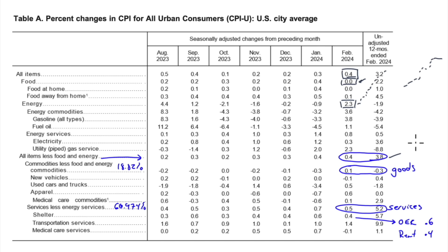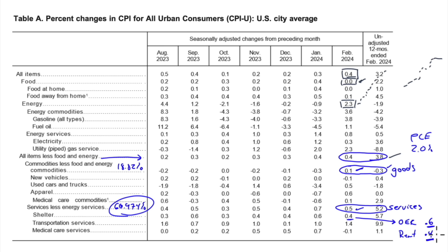All items less food and energy still at 0.4; 3.8% over the year. Remember the target is 2% on PCE, and PCE usually comes in lower than CPI. Commodities at 0.1 — not bad. Services less energy services, where the weight is 61%, came in at 0.5. Shelter at 0.4: owner's equivalent rent is 0.6, rent is 0.4. Inflation is still happening especially with the big weighting that OER has, pulling things up. The weighting of OER is much lower in PCE, so PCE will be more important.